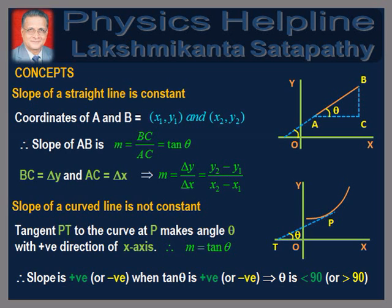In the second figure, we observe that the slope of a curve is not constant, therefore it has to be defined at a point as follows. To define the slope of a curve at P, we draw a tangent to the curve at P. Let θ be the angle made by the tangent with the positive x-direction. Therefore, we define the slope of the curve at P as m = tan θ. It follows that m is positive when tan θ is positive, that is when θ is less than 90°, and it is negative when tan θ is negative, that is when θ is greater than 90°.